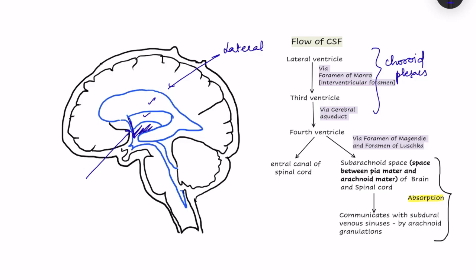From the third ventricle, CSF moves to the fourth ventricle by means of the aqueduct of Sylvius, and some amount is added in the fourth ventricle. It then passes from the fourth ventricle into the central canal of the spinal cord. Laterally there is the foramen of Luschka and medially there is the foramen of Magendie.